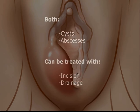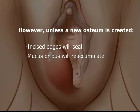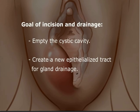Both symptomatic Bartholin gland duct cysts and Bartholin gland duct abscesses are treated with incision and drainage. Incision and drainage alone may give immediate relief. However, unless a new duct ostium is created, the incised edges following incision and drainage will seal and mucus or pus will reaccumulate. Thus, the goal of Bartholin gland duct incision and drainage is to empty the cystic cavity and create a new epithelialized tract for gland drainage.